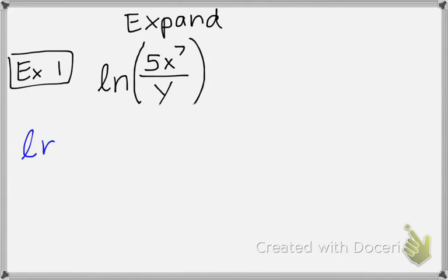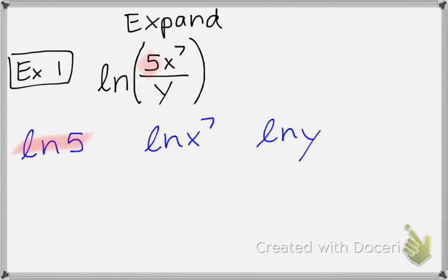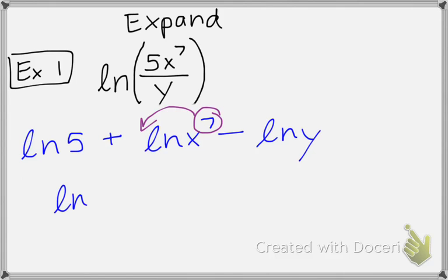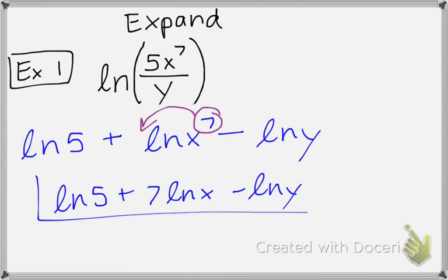I'm going to write it out. Since my 5 is in the numerator, I know this first logarithm will be positive. x to the 7th is also in the numerator, so that will be positive as well. My y is in the denominator, so I know that logarithm will be negative. Now I can expand a little more using the power property — I'm going to take my exponent and move it to the coefficient. And this is my final answer.